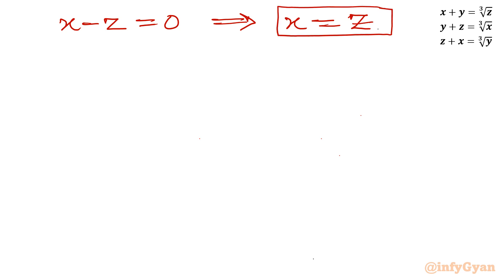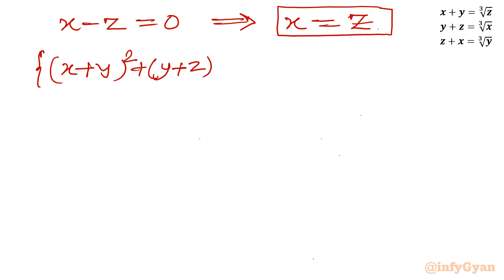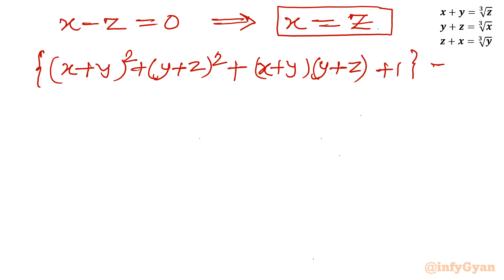Now for the case d + 1 = 0: what is d? d is the second bracket from before, which is (x+y)² plus (y+z)² plus (x+y)(y+z). So d + 1 = 0 means (x+y)² + (y+z)² + (x+y)(y+z) + 1 = 0.